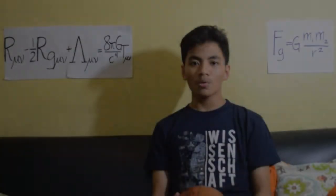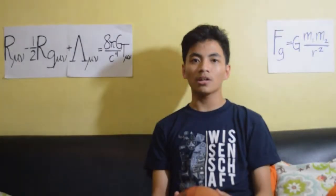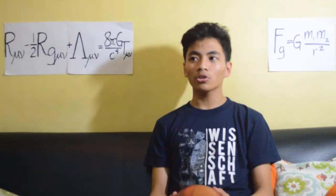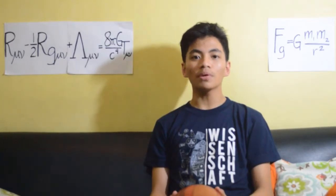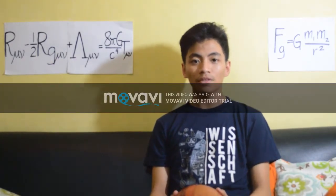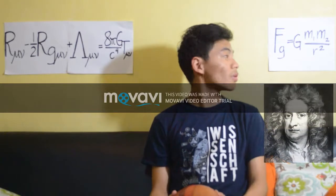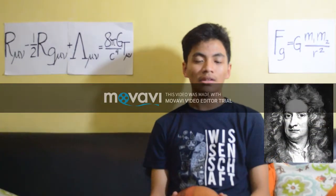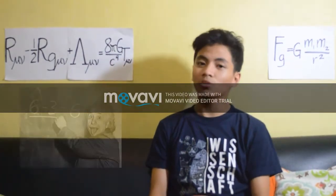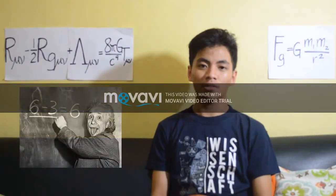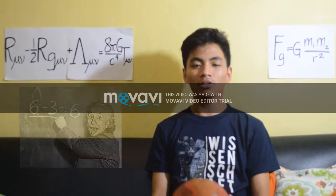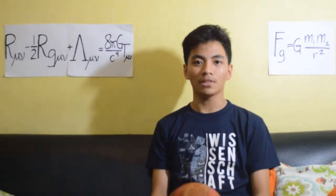We're going to talk about two competing theories about gravity. First is Newton's view of gravity, and the next is Einstein's theory of gravity, also known as the general theory of relativity.